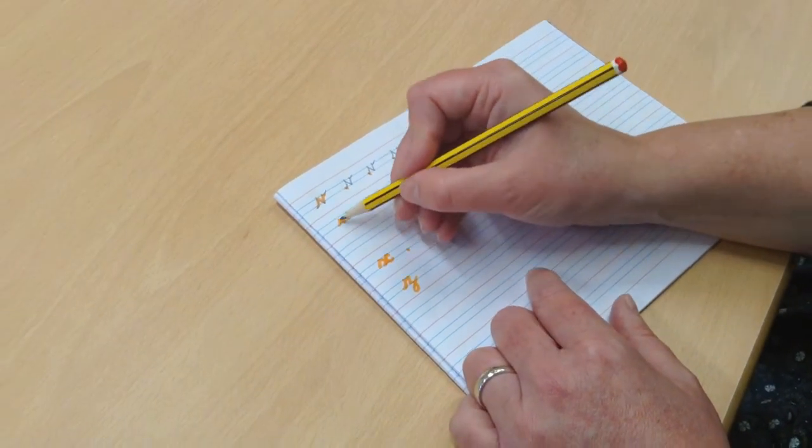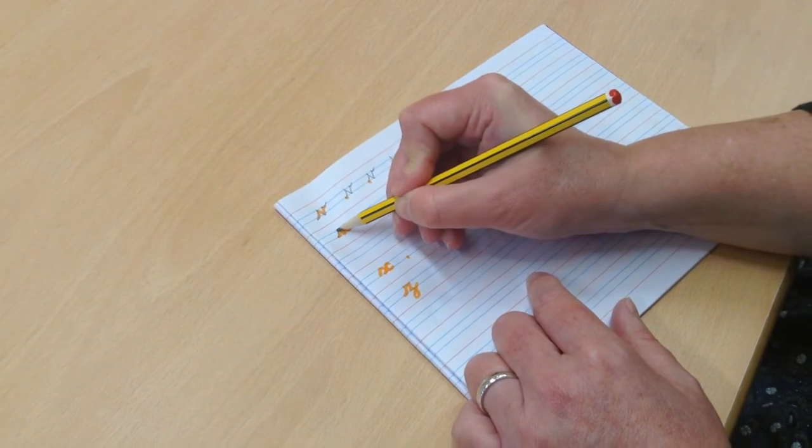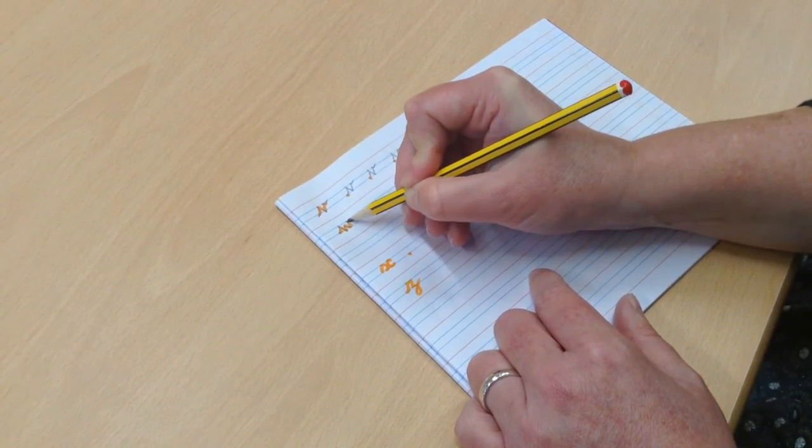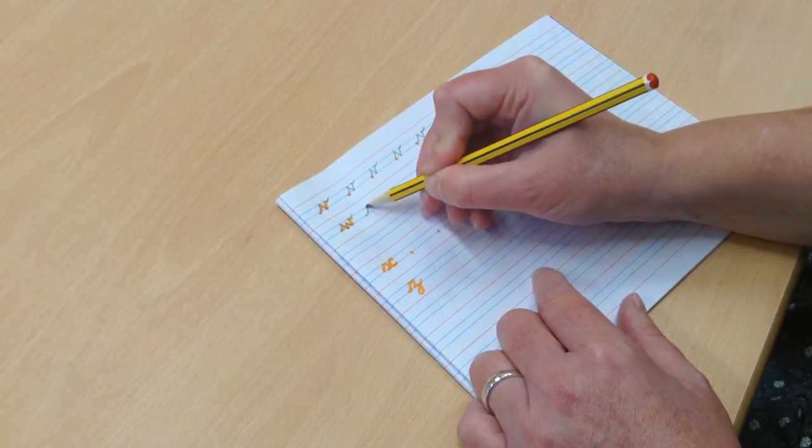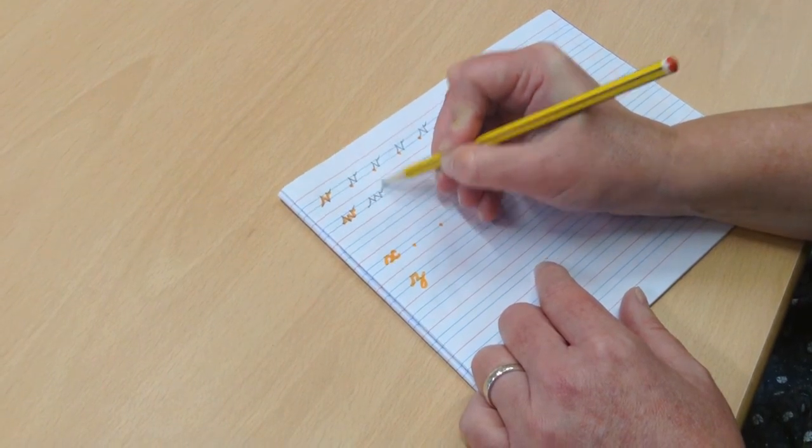With the W it's just the same. Lead-in, diagonal, down, up, down, up, flick. Lead-in, down, up, down, up, flick.